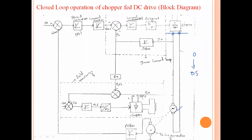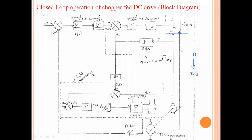The speed of the motor can be sensed by a speed sensor, or we can use a tachogenerator to check the speed of the motor. The sensed speed is given to a filter — if there is any unwanted disturbance or unwanted signal present, that can be eliminated with the help of the filter.